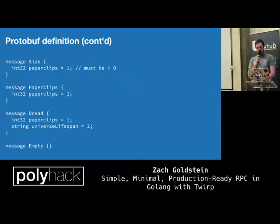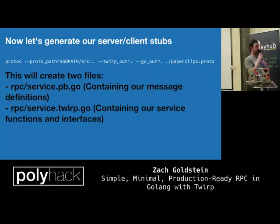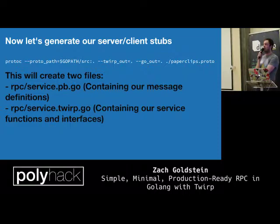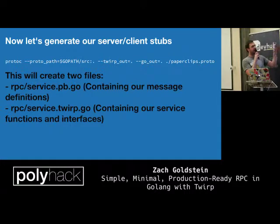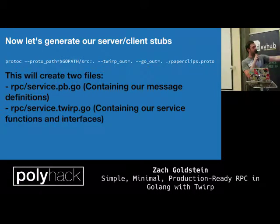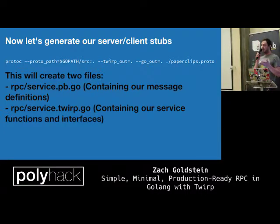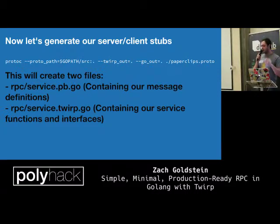To generate code, we use protoc, the protocol compiler — an executable that generates your client and server stubs. Similar to gRPC, you point it at a path and specify your output. This creates two files: one with your message definitions, and another, service.twirp.go, which contains your client code — the stubs you use to access the service easily — and your high-level server interface.